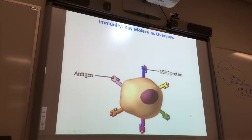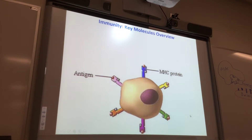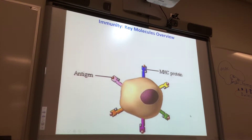Here's a cell — this purple thing is the nucleus. Here's an antigen, this little red thing. And here's this thing called an MHC protein — what is that? Every single cell of your body has your own specific MHC proteins. If you try to transplant my cells that have my MHC proteins into your body, your immune system will say these are not my MHC proteins, and will kill those transplanted cells.